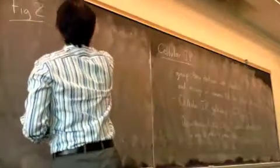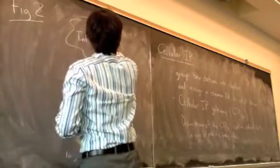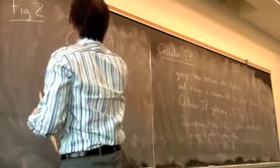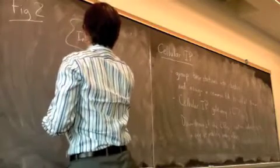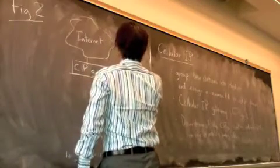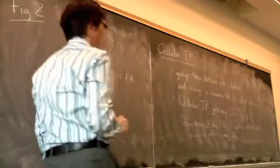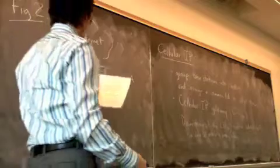So this will be figure two. So here's the internet. Connected to the internet we have the cellular IP gateway. And this acts as the foreign agent for the foreign network, which is made up of a cluster of base stations.